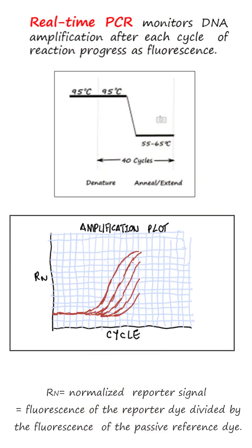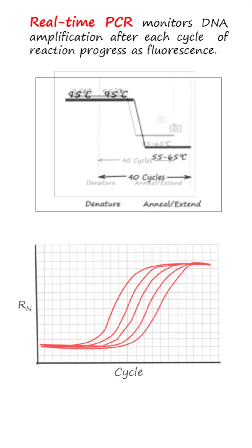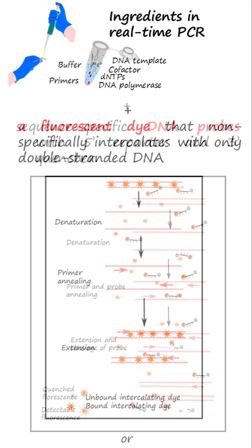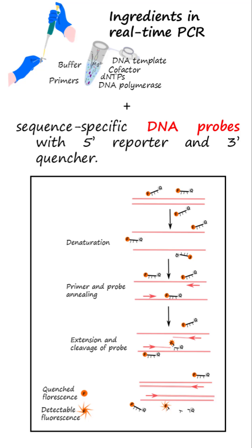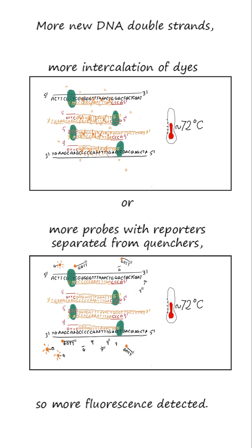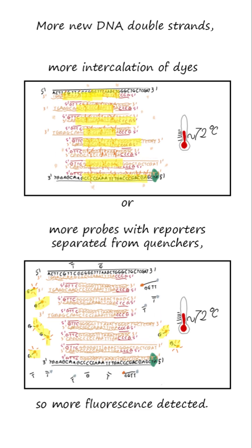In contrast to endpoint PCR, real-time PCR monitors DNA amplification after each cycle of reaction progress as fluorescence. Fluorescence is generated because the basic PCR mix is added with, for example, a fluorescent dye that non-specifically intercalates with only double-stranded DNA, or sequence-specific DNA probes that bind to the amplified region which have fluorescently labeled reporters at the 5' end and quenchers at the 3' end. When the fluorophore is separated from the quencher by the nuclease activity of Taq polymerase as it synthesizes a new DNA strand, the reporter can generate fluorescence. More new DNA double-strands means either more intercalation of dyes or more probes with reporters separated from quenchers, so more fluorescence is detected when the dyes are excited at a specific wavelength of light from the PCR machine.